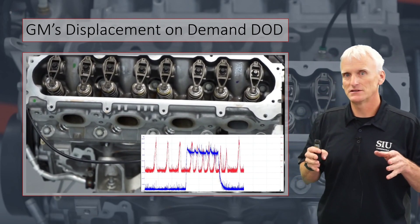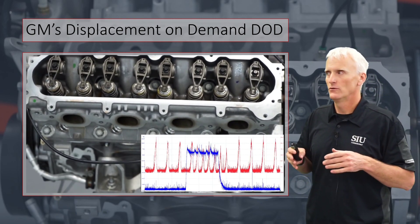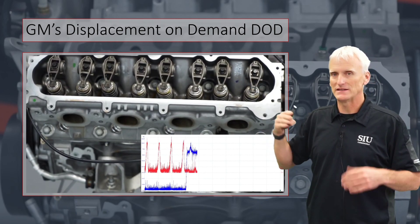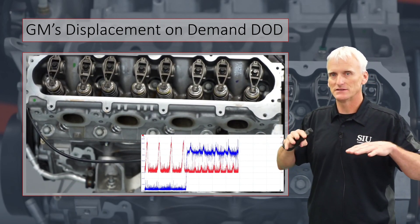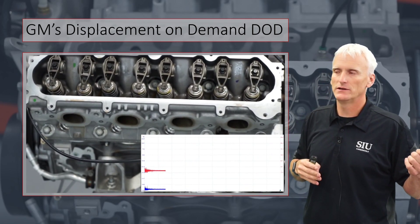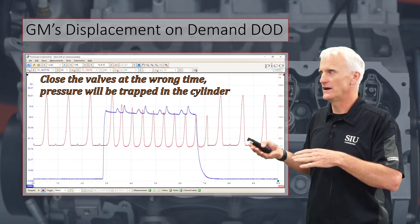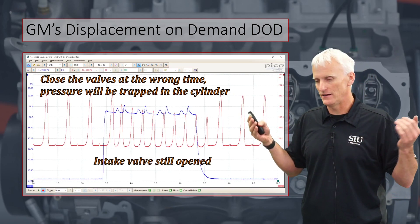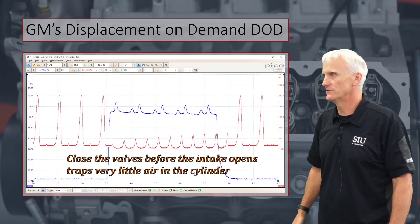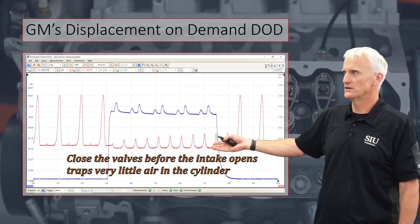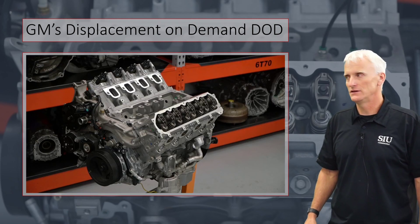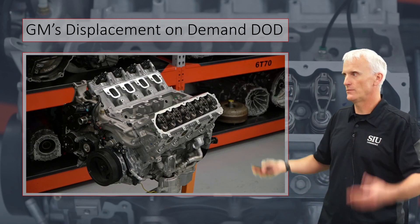These newer systems — the dynamic fuel management system — have a DOD lifter for every cylinder and 17 different modes where they can apply and release these things. It's more advanced than the DOD that's been around since 2005. On the dynamic system, they've got a lifter for every cylinder and can operate in a bunch of different modes. When you're activating during the exhaust stroke, you'll hold a little pressure in there, whereas any other stroke will trap air pressure.